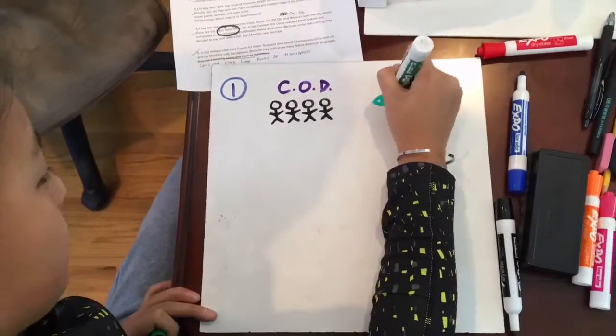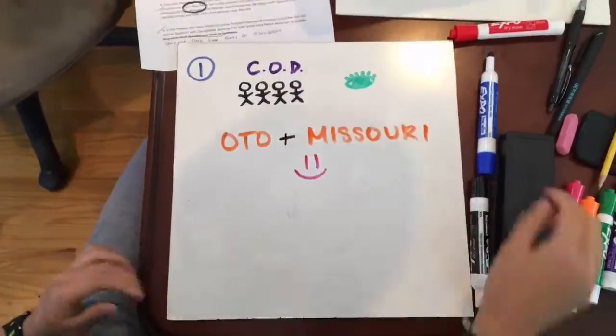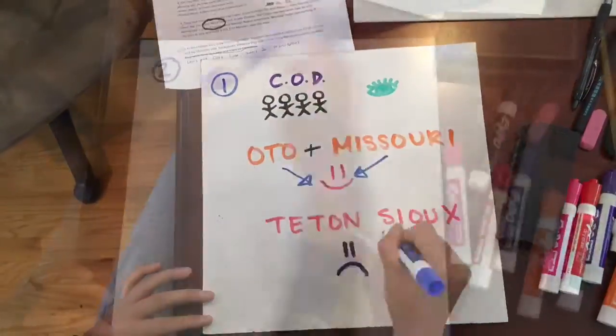They met many Native American tribes. Some, like the Oto and Missouri, were friendly, whereas some, like the Teton Sioux, were not.